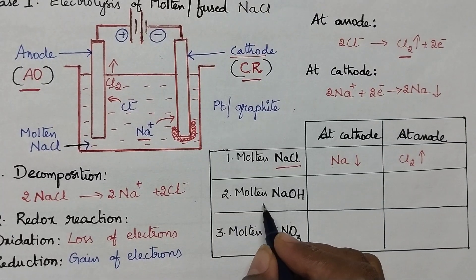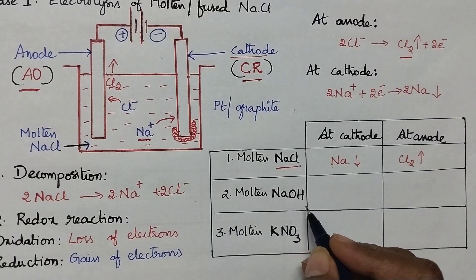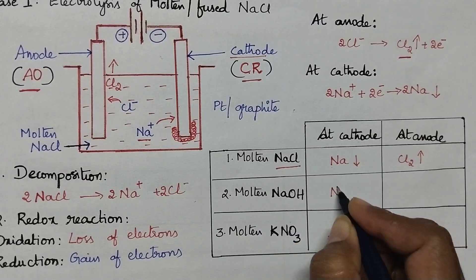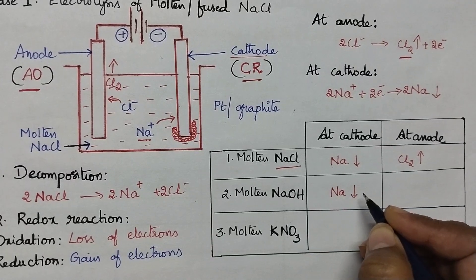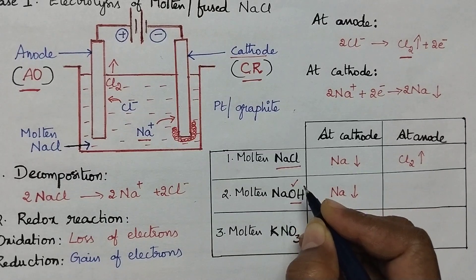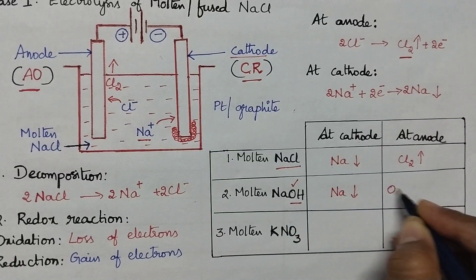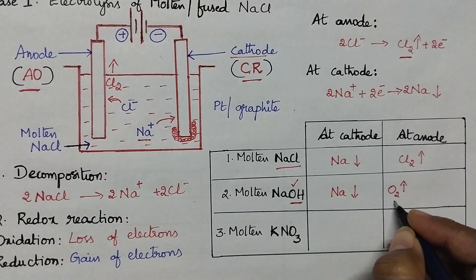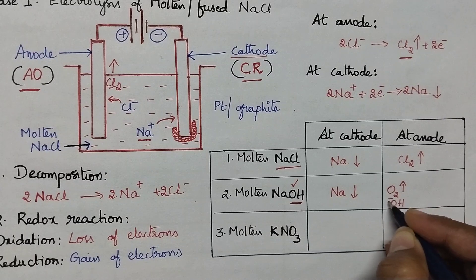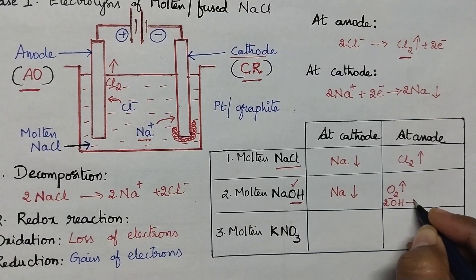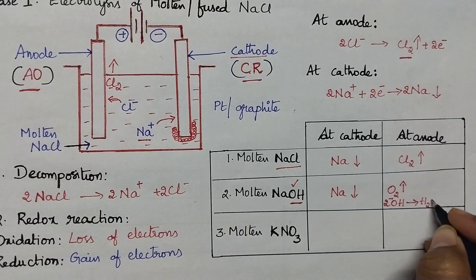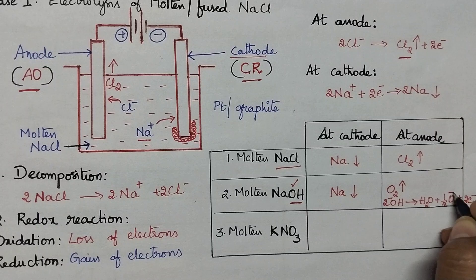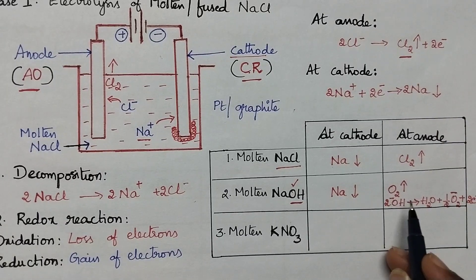Here the electrolytic solution is molten NaOH solution. During the electrolysis of molten NaOH solution, sodium metal is deposited at the cathode. Here the anion contains oxygen as one of the atoms, so oxygen gas will be liberated. The anions, which are OH⁻ ions, migrate towards the anode, liberate two electrons, and get converted into water with the liberation of oxygen gas. So oxygen gas will be liberated at the anode.